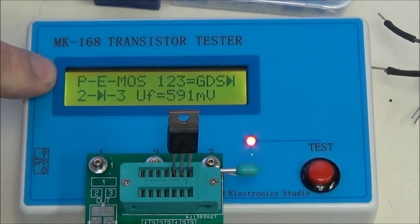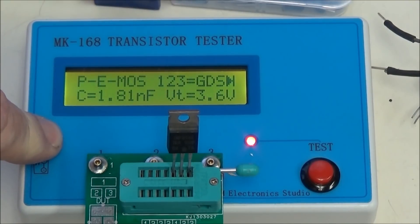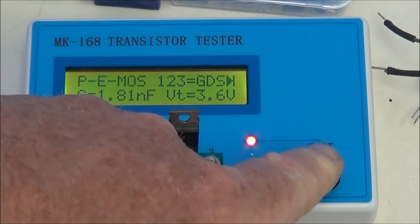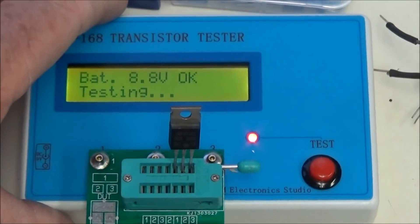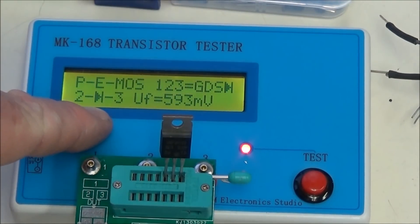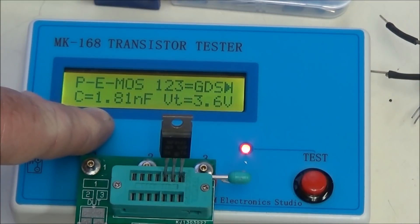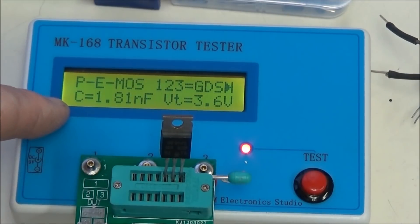It tells you that it's a P-channel MOSFET. Hit it again. It also tells you that it has an internal diode built in.